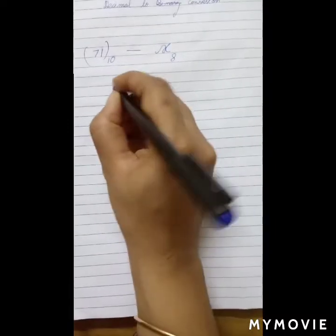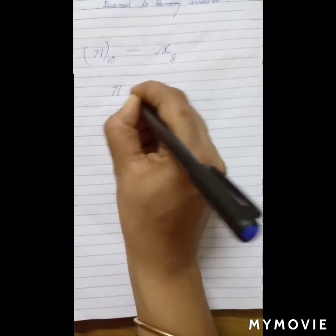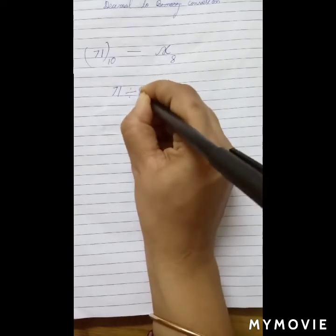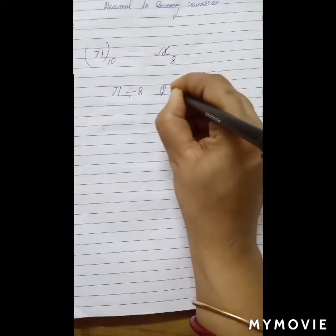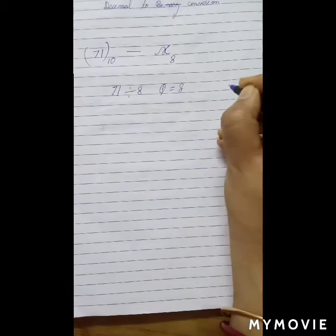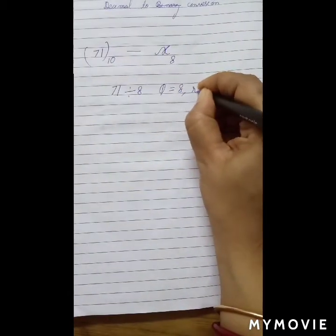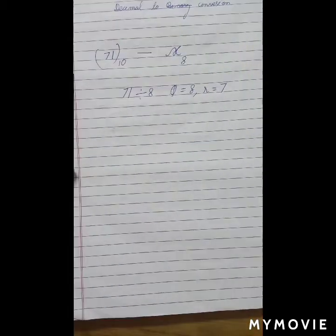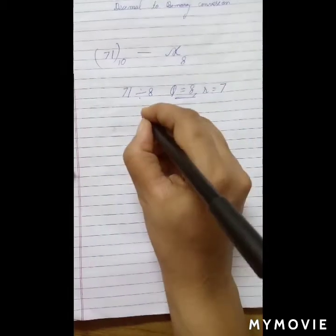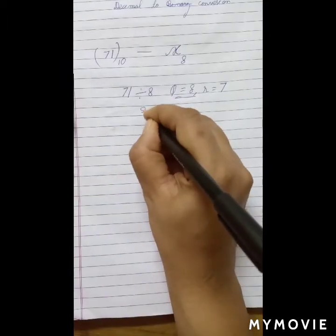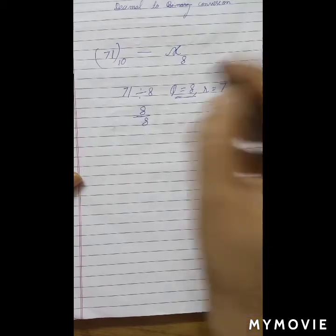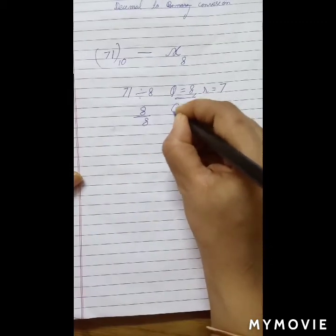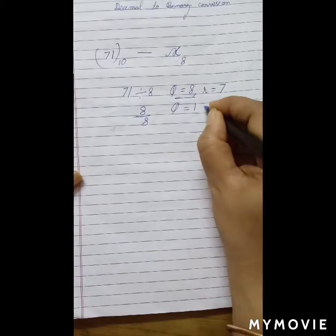First of all, we will divide 71 by 8. If we divide 71 by 8, the quotient is going to be 8 and the remainder is going to be 7. Now we have the quotient 8, so we will divide it by 8 again. We will keep on dividing until the quotient is 0.